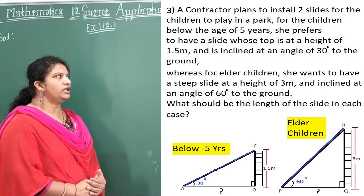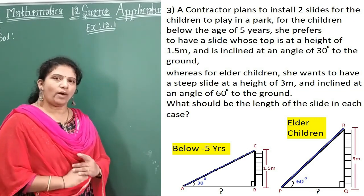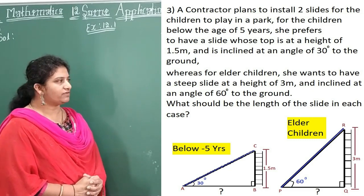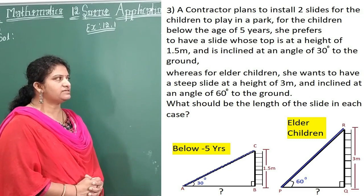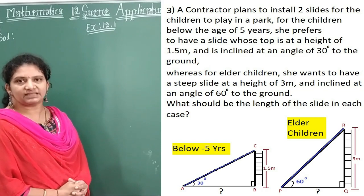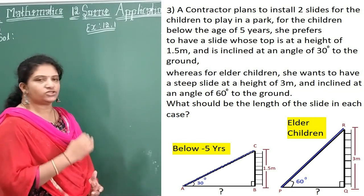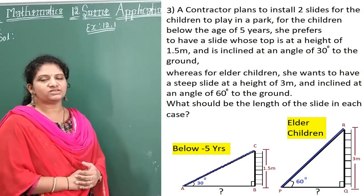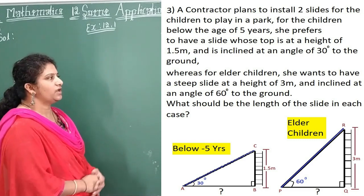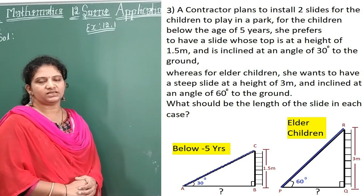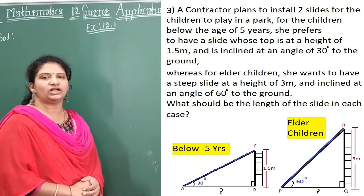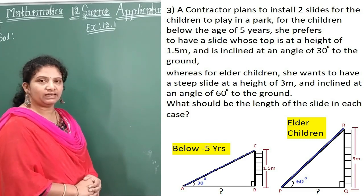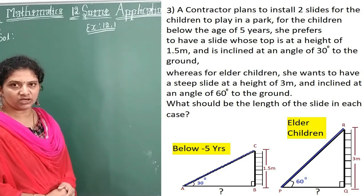For the children below the age of five years, a lady prefers to have a slide whose top is at a height of 1.5 meters above the ground. This slide is for children below five years of age, and is inclined at an angle of 30 degrees. This inclination is also called the angle of elevation. The angle CAB is equal to 30 degrees, and BC is equal to 1.5 meters — that is the height above the ground.